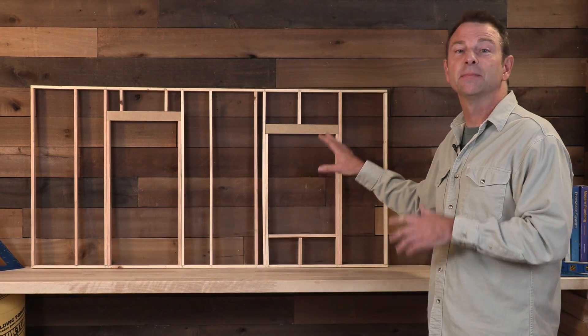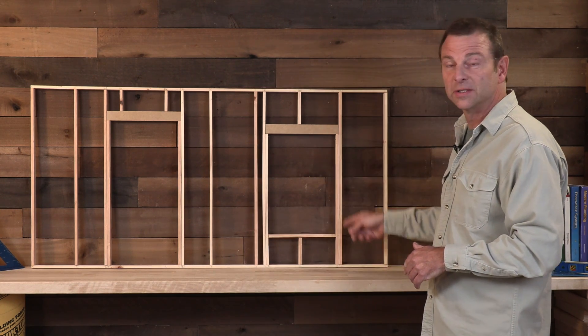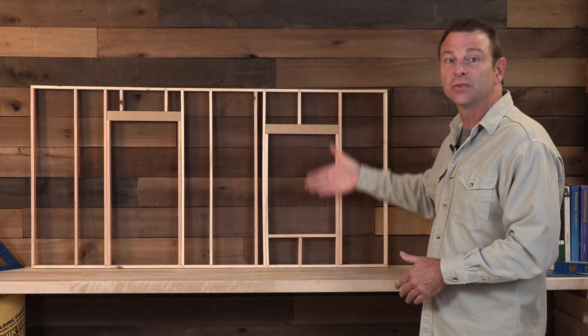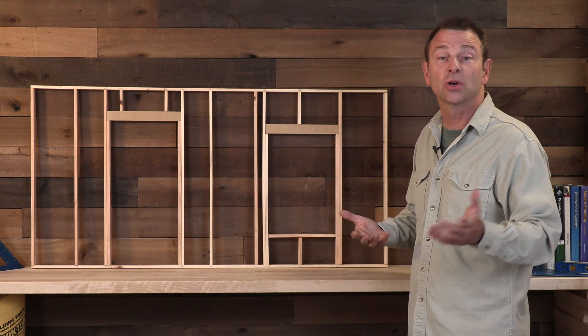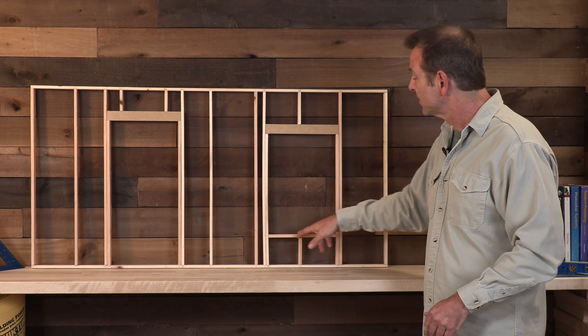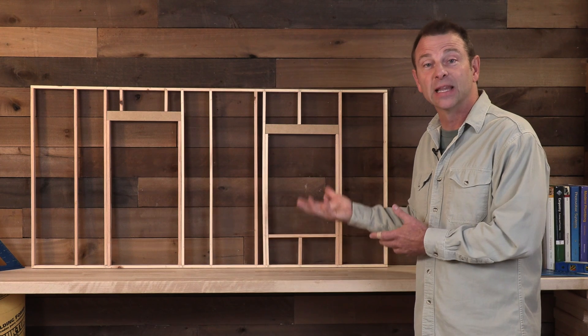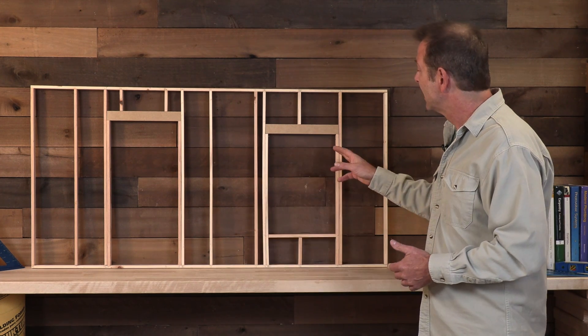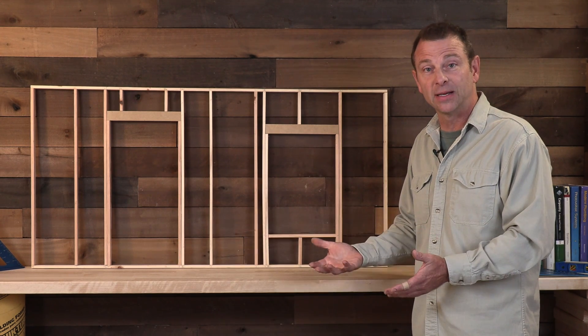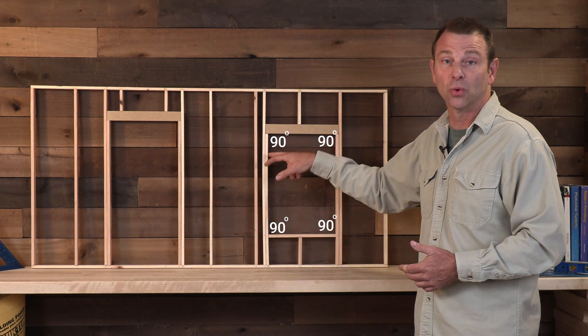So our first method to measure our rough openings, whether they're square, would be plumb, which is perfectly vertical, and level, which is perfectly horizontal. Any vertical surface like this, we can use a tool called a level to measure those two things, level and plumb. So if we can measure this line, bottom edge and top edge, and they become level, and then we can measure the left and right sides and determine that they're perfectly plumb, that will tell us that these angles are 90 degrees in all four corners.